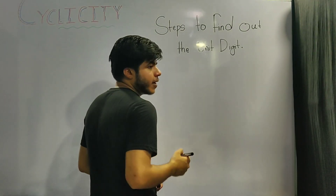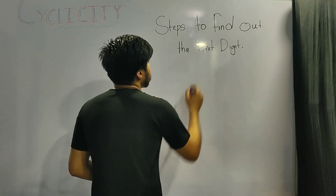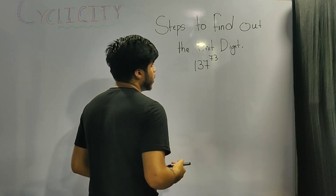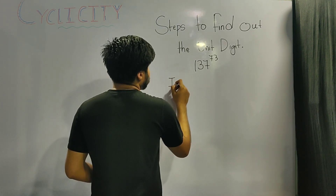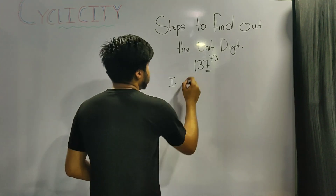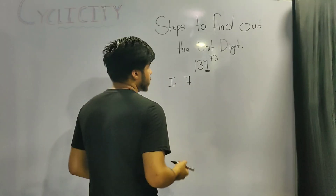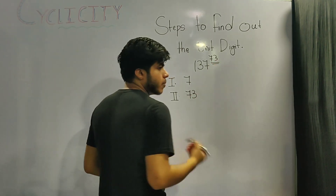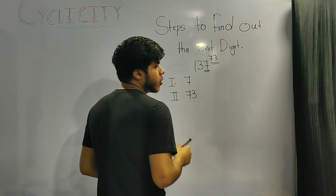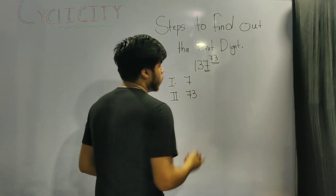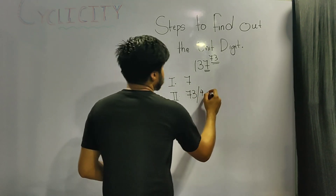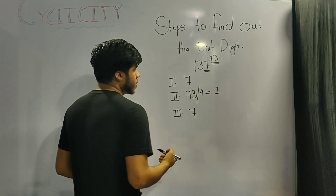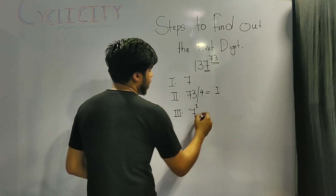Now we'll learn how to find the unit digit in 3 simple steps. Suppose we need to find the unit digit of 137 raised to the power 73. Step 1: note down the unit digit of the number — in this case it is 7. Step 2: find the remainder upon dividing the power by the cyclicity of the unit digit. The cyclicity of 7 is 4, so we divide 73 by 4, giving remainder 1. Step 3: raise the unit digit 7 to that remainder — 7 to the power 1 — and that is our answer.